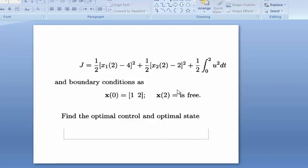We have boundary conditions here: initial condition X(0) = [1, 2], and X(2) is free. Find the optimal control and optimal state.